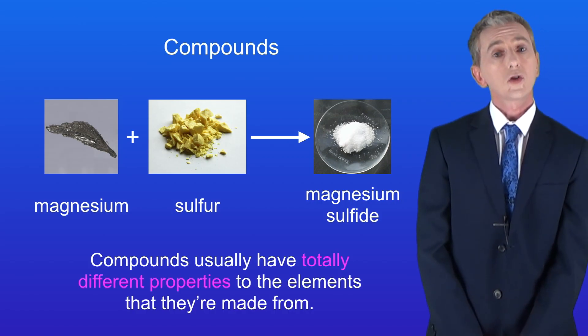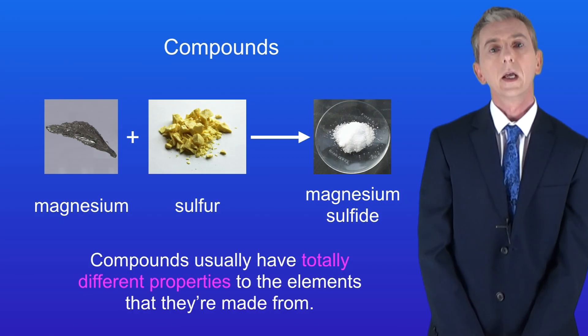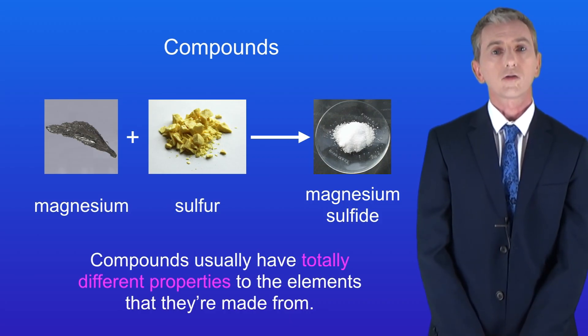Another key factor is that compounds usually have totally different properties to the elements that they're made from. So as you can see magnesium is a shiny metal and sulfur is a yellow solid. However magnesium sulfide is a white crystal.